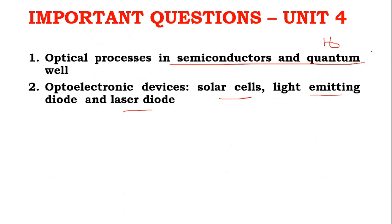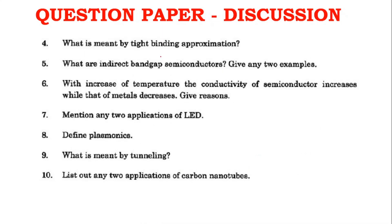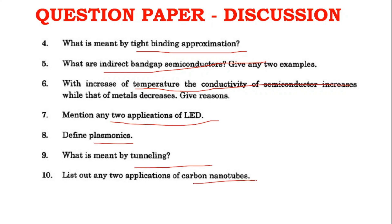Now we will see the November-December 2024 question paper discussion. Part A questions include: what are basic lattice parameters, define coordination number, define electrical conductivity of metals, tight binding approximation, indirect band gap structure, increase of temperature and conductivity of semiconductor, two applications of LED, plasmonics, tunneling, and carbon nanotubes. About 5 to 6 of these questions are confirmed repeating topics, including Unit 5 nanotubes and tunneling.